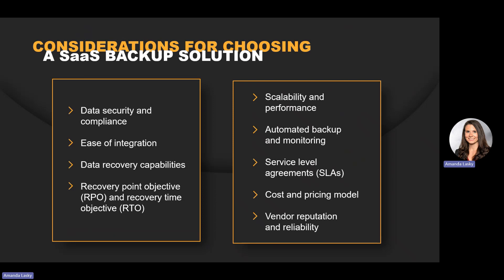Accidents do happen, so you need a backup solution with flexible and reliable data recovery options. Look for features such as file level, folder level, or user level recovery, fast and reliable recovery, and point-in-time restore. To optimize how often data is backed up and how quickly it can be restored, look for flexible backup schedules, multiple backup destinations, and incremental or differential backups to help optimize your RPO and minimize data loss. As your business grows, your data backup needs will also increase — choose a solution with unlimited storage capacity, high availability, and high performance. Let automation help you too: choose a solution that offers round-the-clock monitoring, reporting, and backup, and receive alerts and notifications on backup status, failures, or errors.